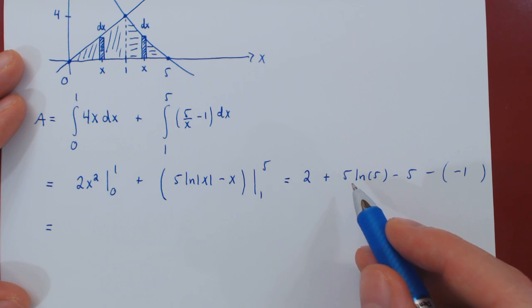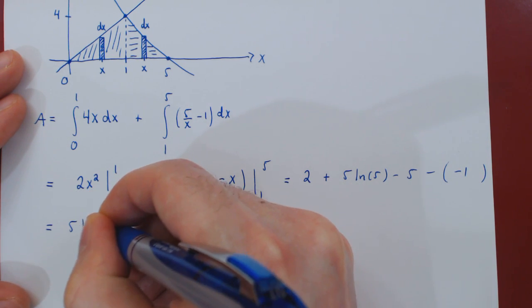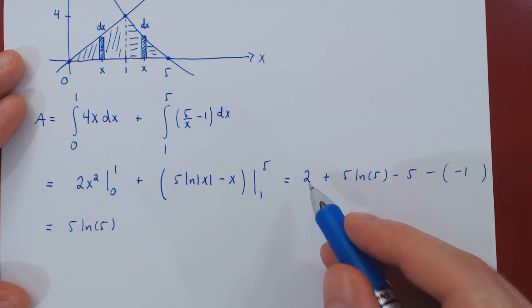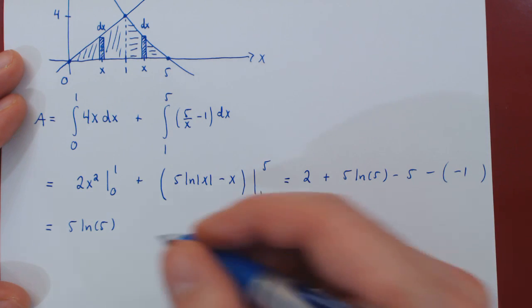If we simplify, we have a single multiple of ln of 5. 5 ln of 5. And then 2 minus 5, negative 3, negative negative 1 plus 1, negative 2.